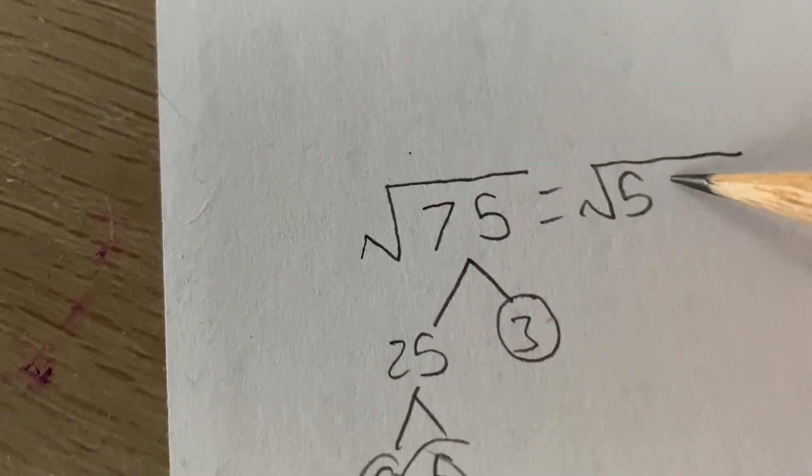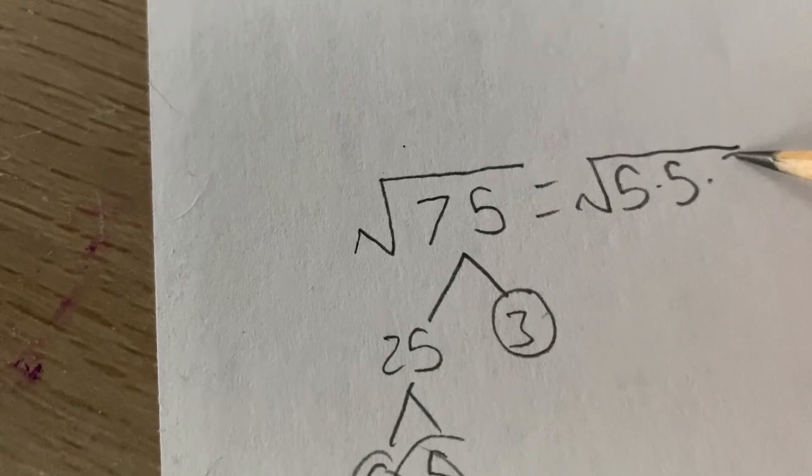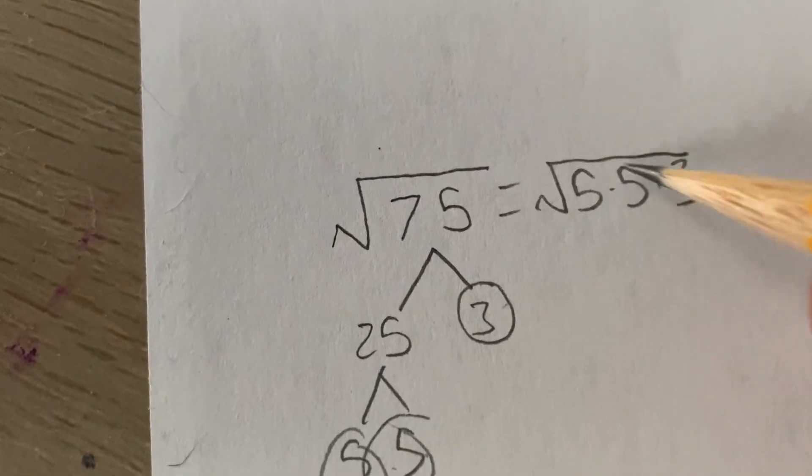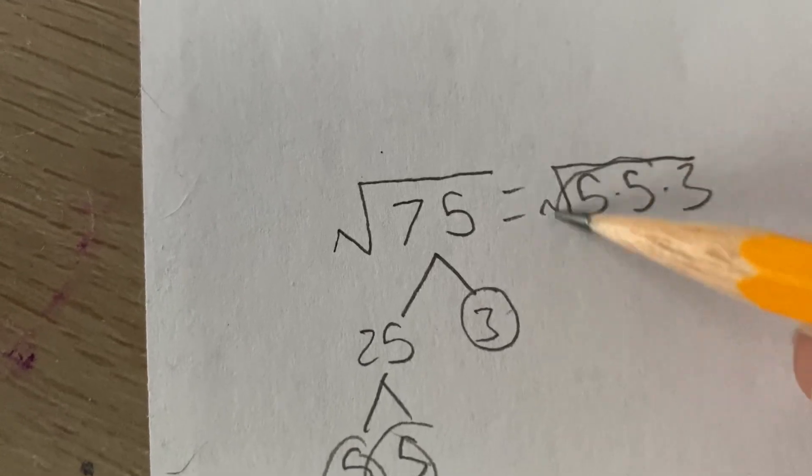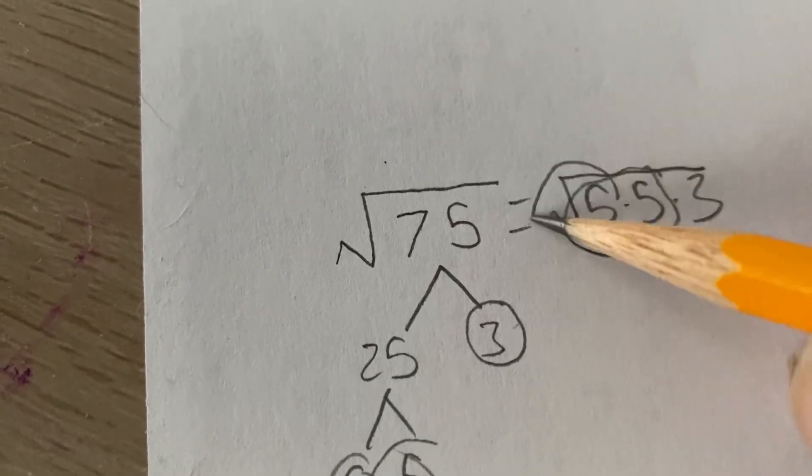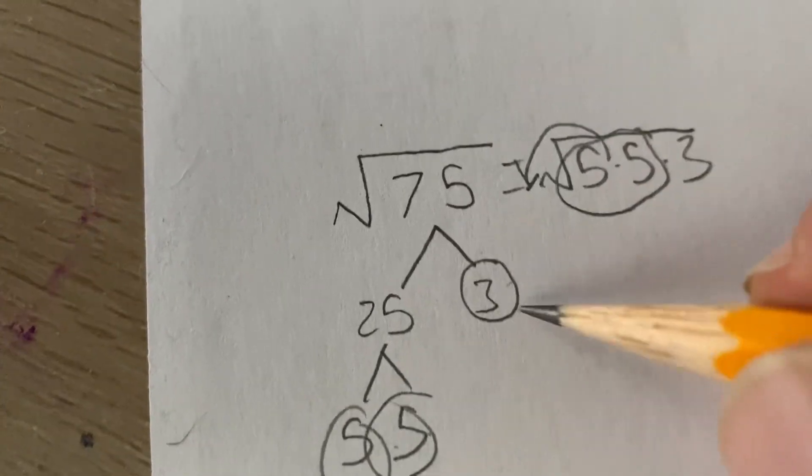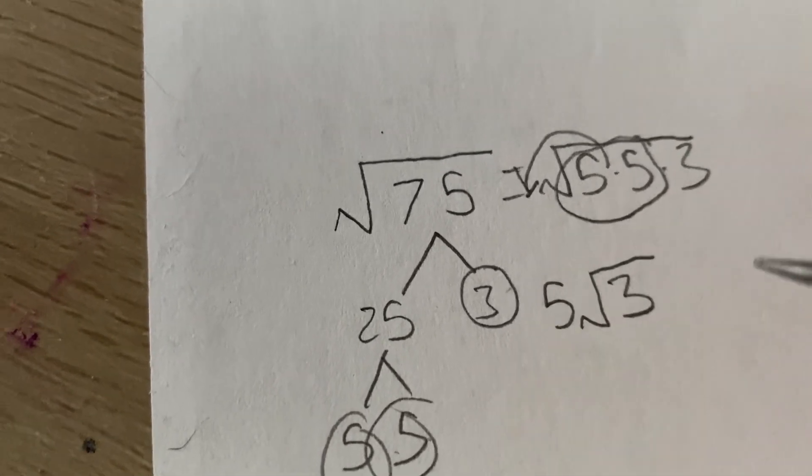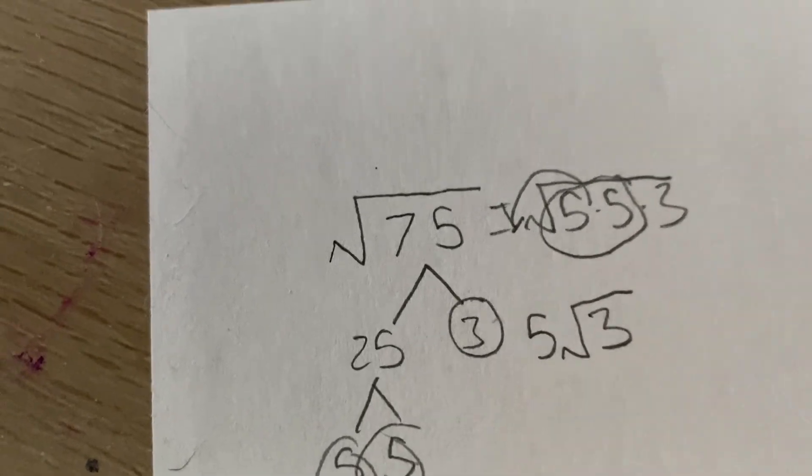So the square root of 5, 5, 3. So the way you simplify this is if there's a double, if there's a double, it ends up as one number on the outside. So now we have a 5 on the outside and a 3 on the inside.